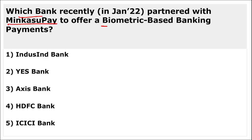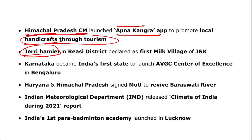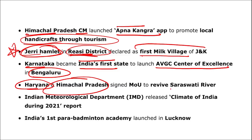Axis Bank partnered with Minaksh Pay to offer biometric-based banking payments. Himachal Pradesh Chief Minister launched the 'Apna Kangra' app to promote local handicrafts through tourism. Jerry hamlet in Reasi district was declared the first milk village of Jammu and Kashmir. Karnataka became the first Indian state to launch the AVGC Centre of Excellence in Bangalore. Haryana and Himachal Pradesh signed an MoU to revive the Saraswati River.